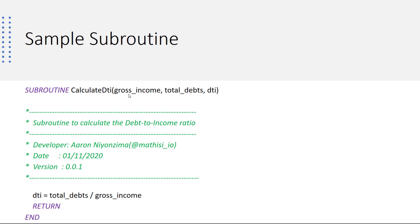It has three parameters. Two of which are inward parameters — gross income and total debts — and one outward parameter. As you can see, we determine the debt-to-income ratio as total debts over gross income.